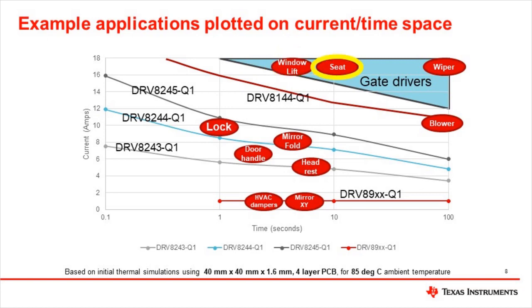There may be several seat motors with high current in each seat, so a multi-channel gate driver like the DRV8714Q1 or DRV8718Q1 is a good choice. So far, all of these applications have been bidirectional, but some motors only need to turn in one direction. Windshield wiper motors are typically unidirectional and rely on a mechanical arrangement to turn the rotary motion into wiper motion. Due to their high current and long duration operation, a gate driver with external FETs is probably needed. Similarly, the cabin ventilation blower runs in one direction and can run continuously; depending on the current, a DRV8144Q1 might be a candidate. Some blowers use brushless motors rather than brushed motors; for these, look at TI's BLDC motor drivers.